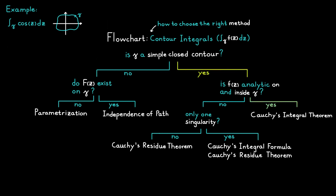In our next example, the contour gamma is a simple closed contour and the function will be analytic on and inside the contour since we don't have any singularities. Therefore we can use Cauchy's integral theorem to solve this one.